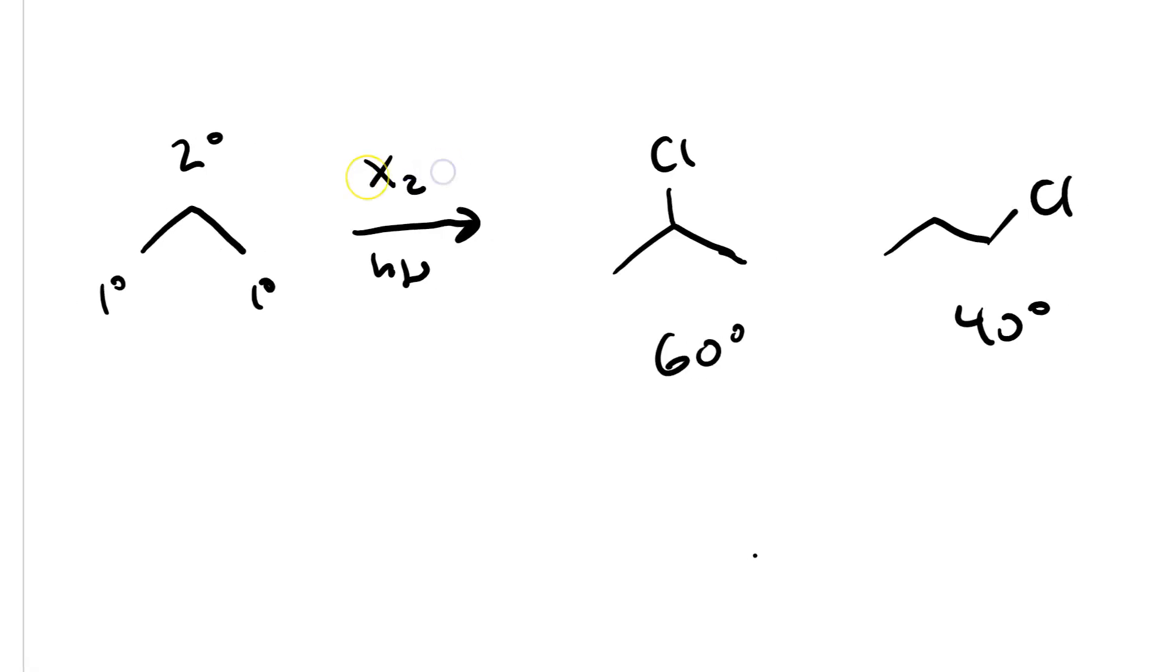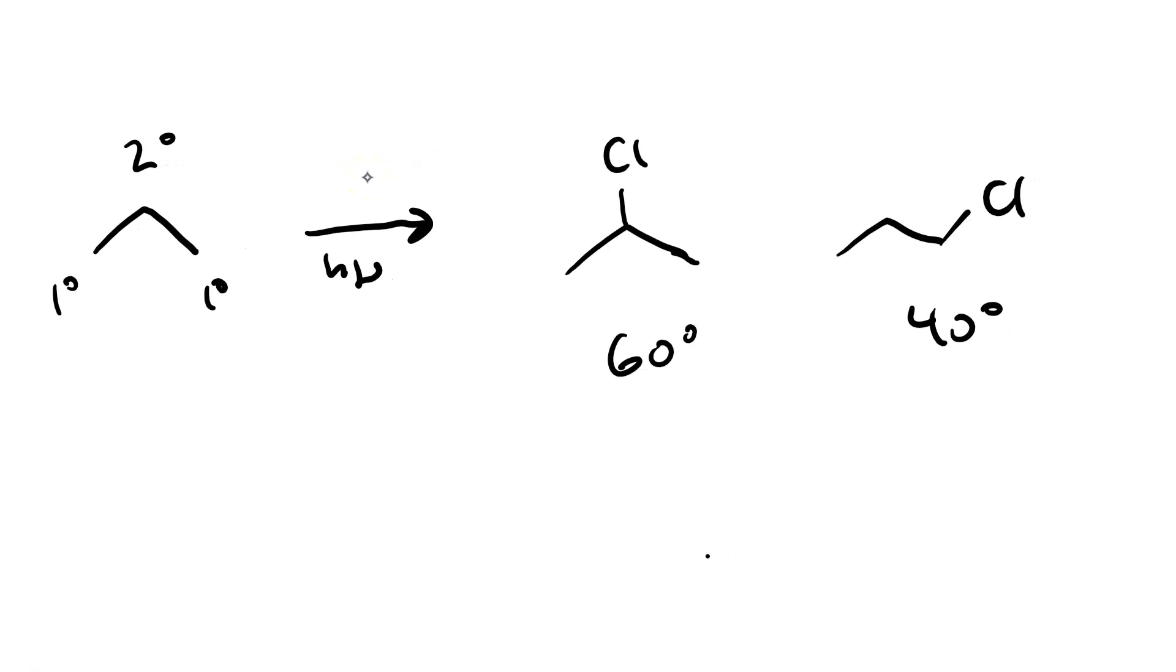If we're doing halogenation on propane, where we have a secondary carbon and two primary carbons, well chlorination in this case will give us a 60-40 mixture of the secondary alkyl chloride versus the primary one.